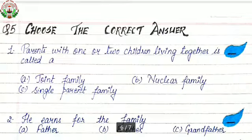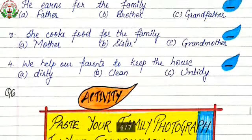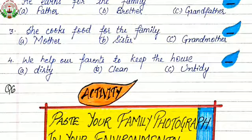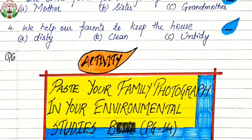Question number five, choose the correct answer. Three options are given for each question. First, parents with one or two children living together is called: A) joint family, B) nuclear family, C) single parent family. Second, he earns for the family: A) father, B) brother, C) grandfather. Third, she cooks food for the family: A) mother, B) sister, C) grandmother. Fourth, we help our parents to keep the house: A) dirty, B) clean, C) untidy.